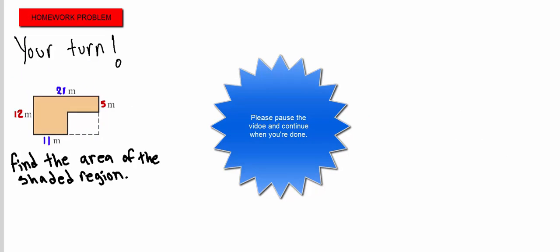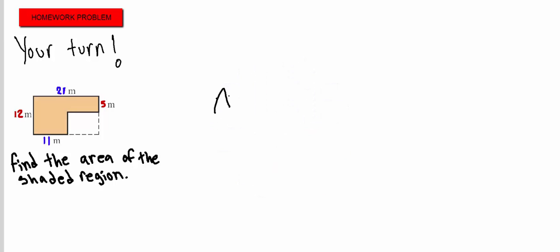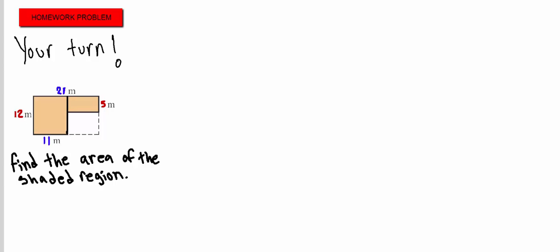Now it's your turn. I would like you to pause the video and solve this one on your own. The answer you should have gotten was area equals 182 meters squared. Remember, never forget your squared. To solve this, you need to split the shape. We realize we don't know one base, but we know that this side is 11 and the total is 21. So we split them up — keeping 11 here, and knowing the remainder is 10, and it still totals 21.